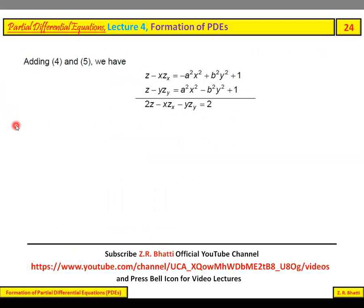Adding equations (4) and (5), when we add them, the constants with a² and b² will cancel out.